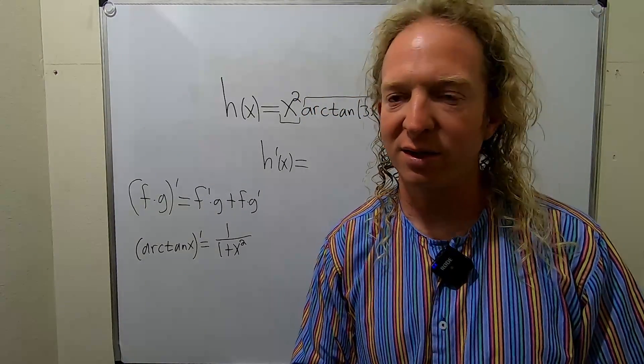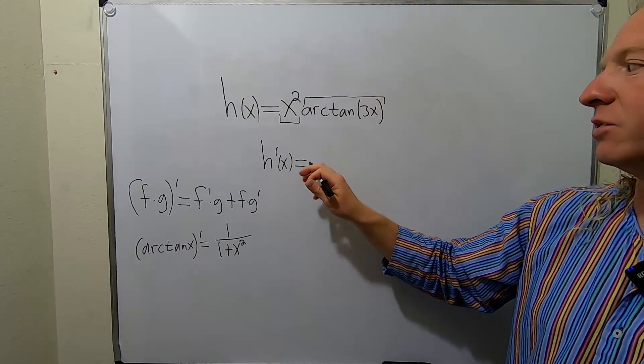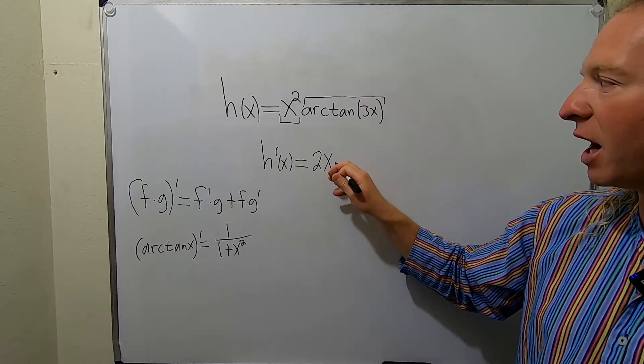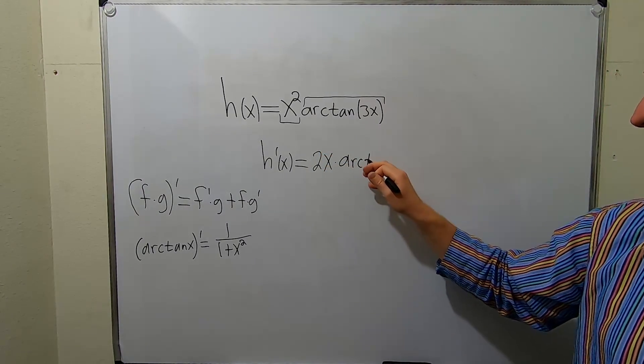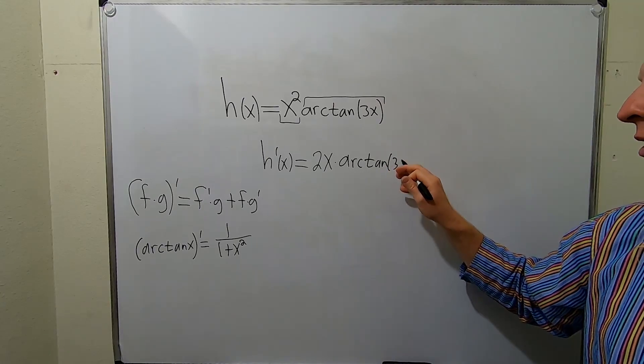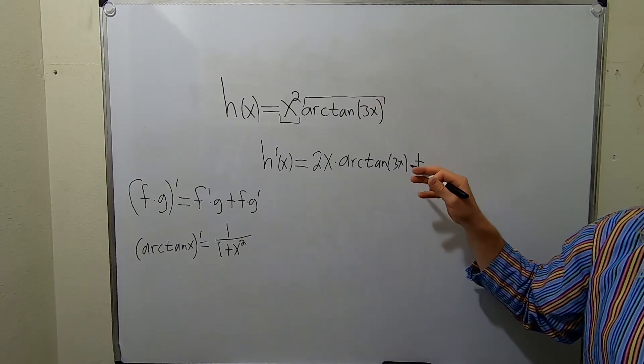So the derivative of the first is 2x times the second, arctangent of 3x, plus the first, which is x squared,